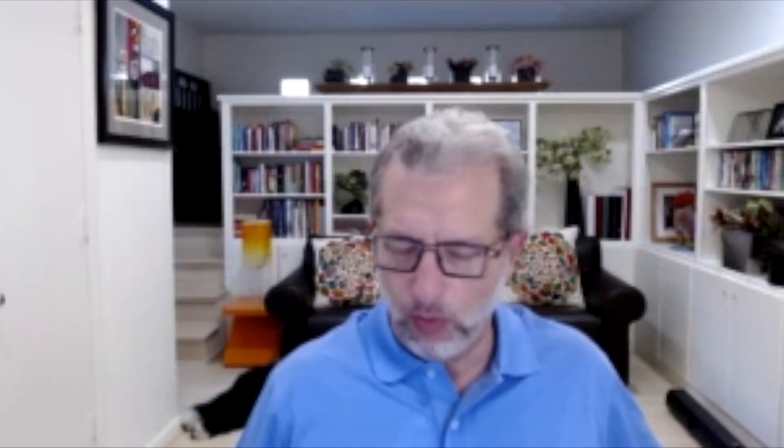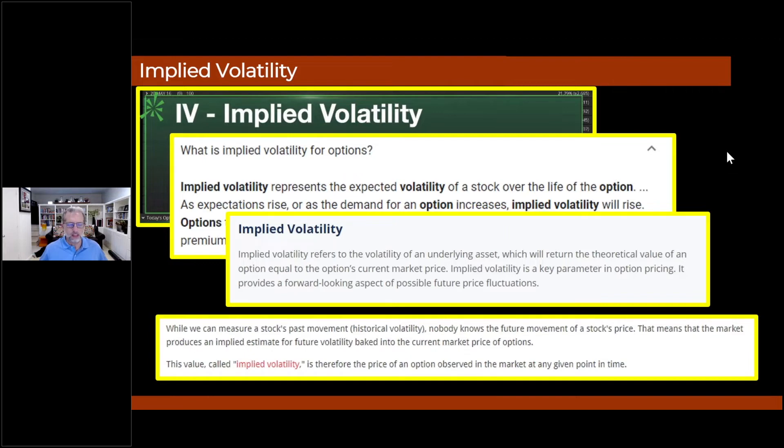Now let's go to one more definition. So while we can measure a stock's past movement, historical volatility, new concept, while we can measure a stock's historical volatility, past movement, nobody knows the future movement of a stock price. That always stumped me - if you don't know, what the heck is it? That means that the market produces an implied estimate for future volatility, key point here, baked into the current market price of options.